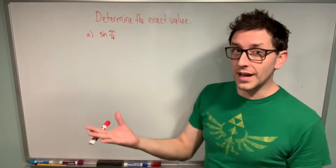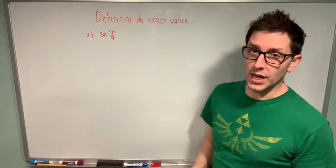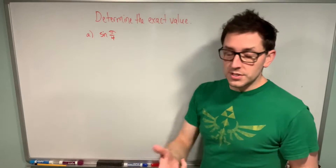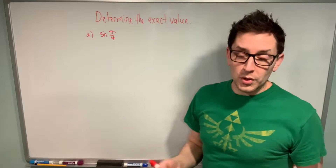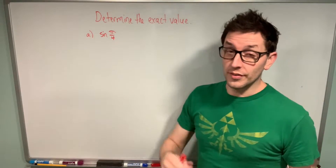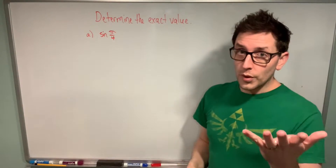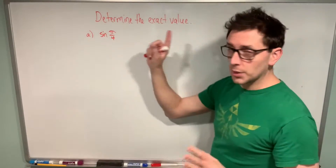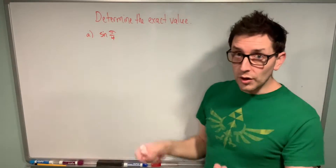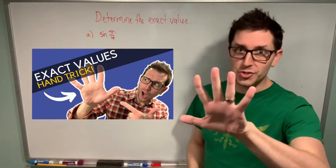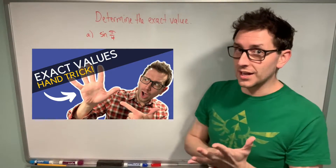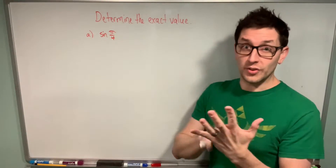We are showing up to find some exact values of trigonometric expressions. So if you want to find the exact value of a trigonometric expression like sine of pi over four, you might be tempted to grab your calculator. Odds are you're going to get some weird decimal number. In this video I want to show you how to find the exact value of trigonometric expressions without using your calculator. In a previous video, I showed you a very crazy hand trick that you can use, and literally all you need is your hands.